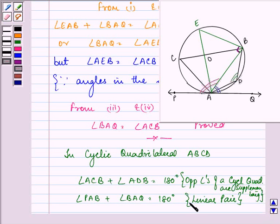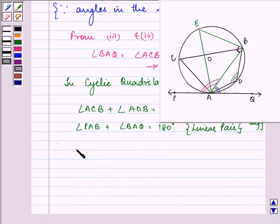From these two equations, we get angle ACB plus angle ADB is equal to angle PAB plus angle BAQ. Because they both are equal to 180 degrees, their sum will be equal to each other.